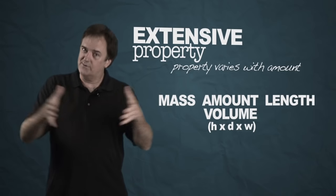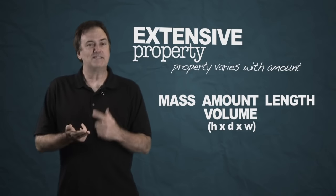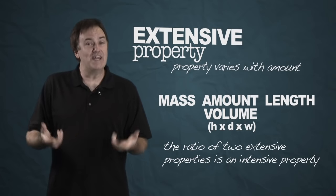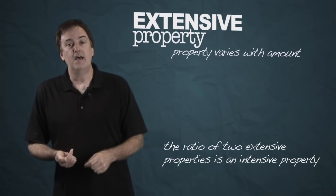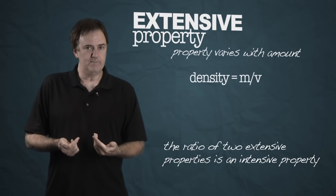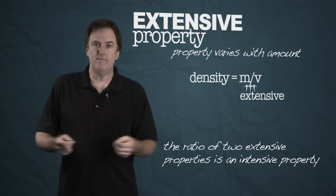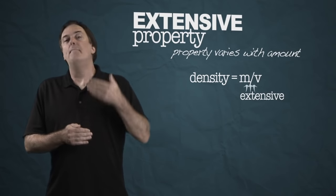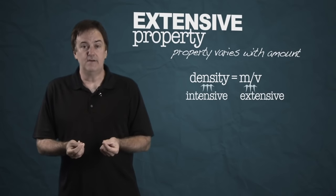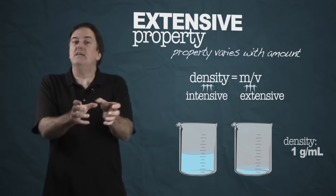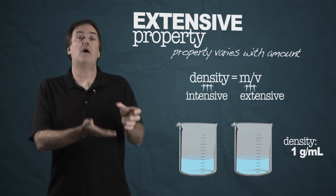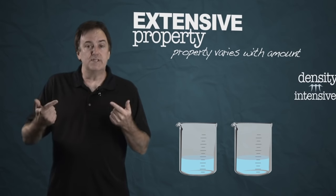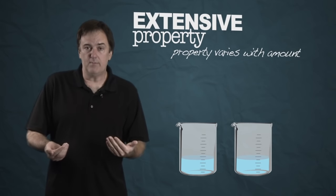An interesting thing about extensive properties: if you take the ratio of one extensive property against another extensive property, you get an intensive property. A great example is density — mass per unit volume. Mass is extensive, volume is extensive, but mass divided by volume gives you density, which is intensive. In the water example, when I split the water, the density is still approximately one gram per milliliter in both portions.